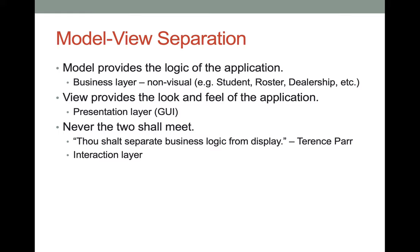Separate from the model is the view — stuff that a human can interact with: the parts we see, hear, read, and give feedback to the computer with, whether typing or clicking on window elements. It's the barrier between the computer and the person, often called the presentation layer. Our GUI is the view for the applications we've been talking about. In web development, the presentation of a web page is your view, while model elements are usually on the server.